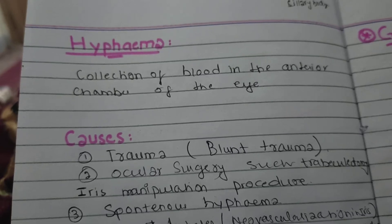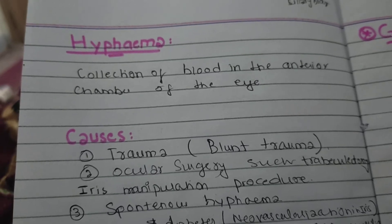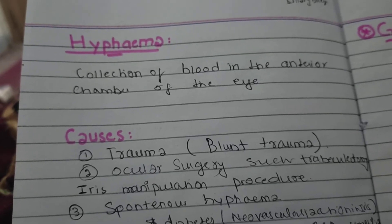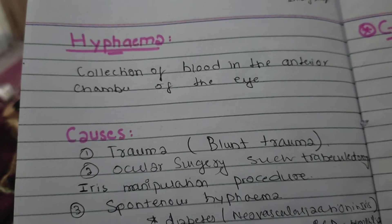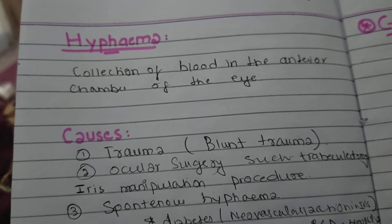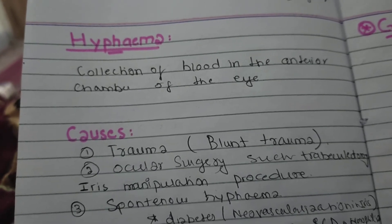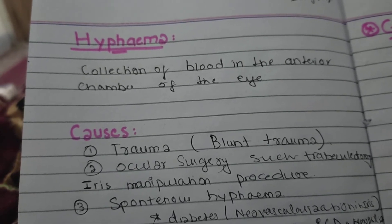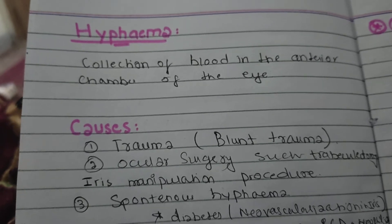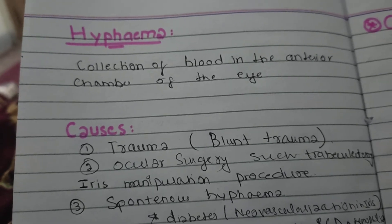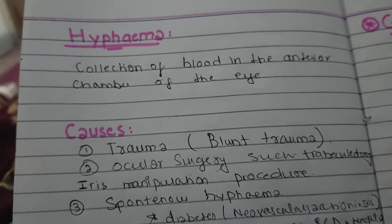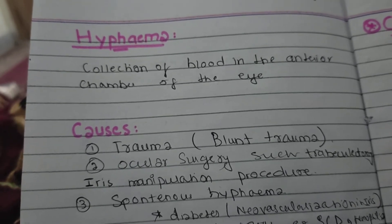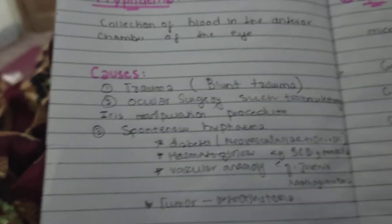Assalamu alaikum everyone. In this video we are going to discuss hyphema. Hyphema is basically what happens when blood accumulates in the interior chamber of the eye.